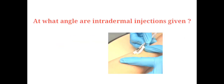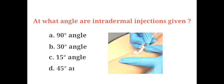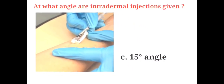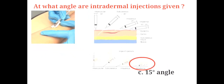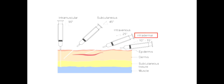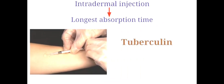At what angle are intradermal injections given? A. 90 degrees, B. 30 degrees, C. 15 degrees, D. 45 degrees. The answer is C. 15 degrees. In an intradermal injection, medication is delivered directly into the dermis, the layer just below the epidermis. The injection is given at an angle of 10 to 15 degrees, with the needle placed almost flat against the patient's skin. Intradermal route has the longest absorption time and is used for sensitivity tests like tuberculin and allergy tests.